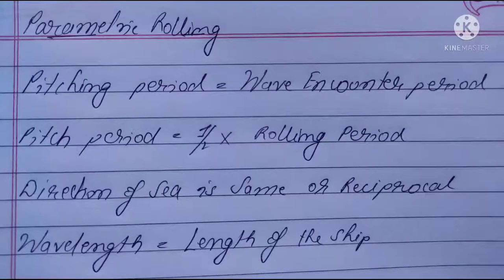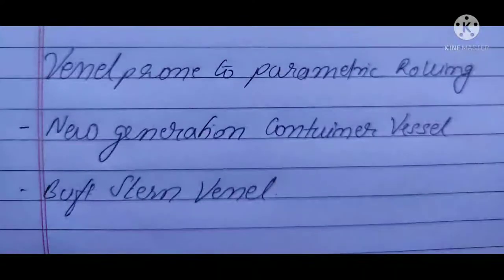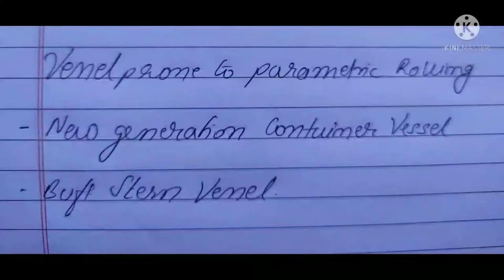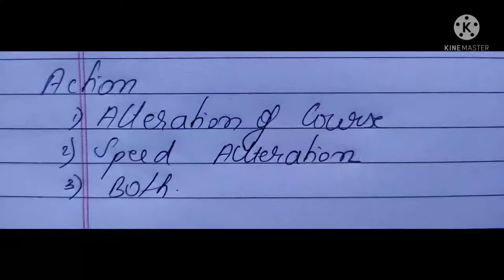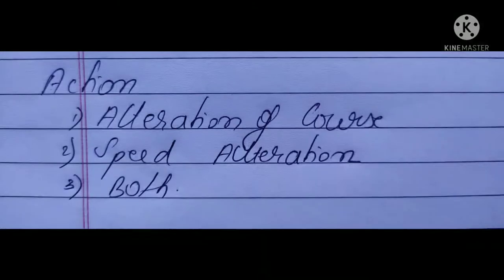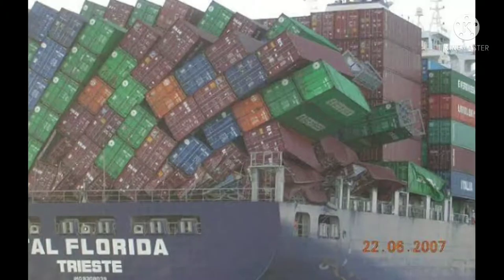The vessels which may encounter parametric rolling are new generation container vessels and bluff-formed vessels. The corrective actions for parametric rolling are alteration of course, alteration of speed, or both.